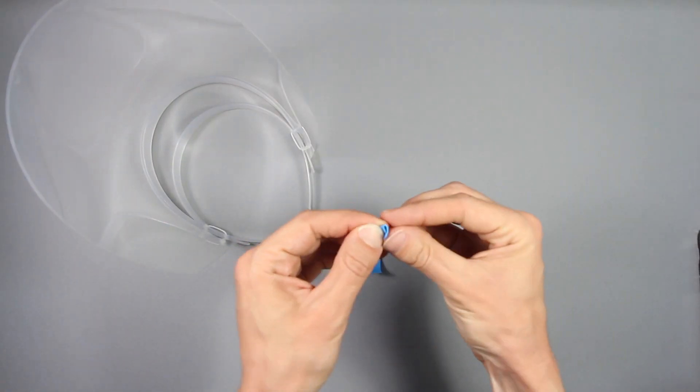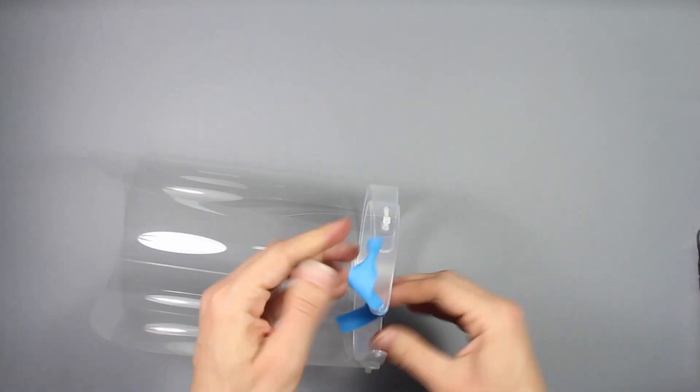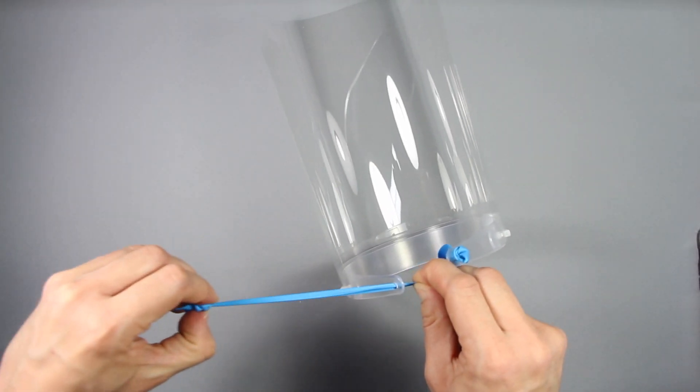Thread the end of the tourniquet band through the hole in the end of the headband. Then tie a knot or two to secure it in place. Repeat on the other side.